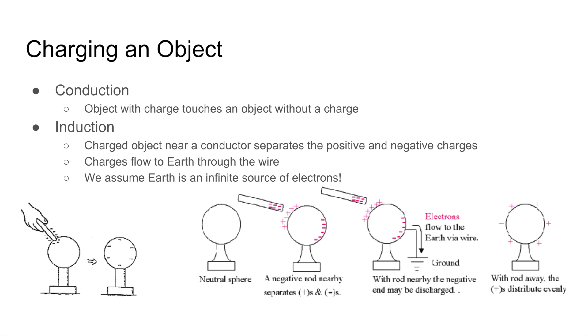And we also assume that Earth is an infinite source of electrons, so that the electrons will just flow there and none of them will flow back. So when we disconnect that wire, that positive charge is still on that sphere, but that negative charge all has flowed into the ground, which means that this sphere will end up with a net positive charge.